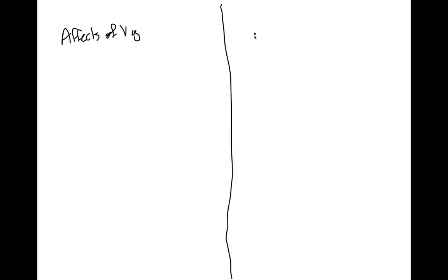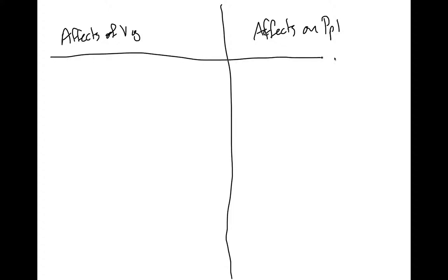Right now we're going to talk about the effects of vegetation, and then we'll talk about the effects on the people. For our first point, we really need to look at the plant life, and in our plant life, it needs to be able to withstand seasonal differences.